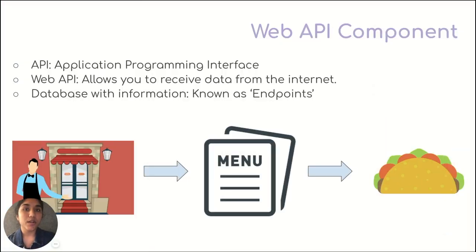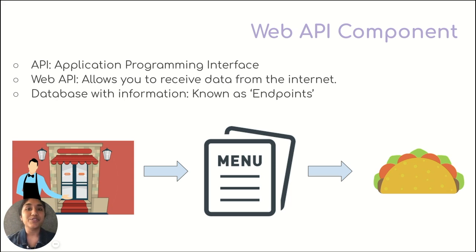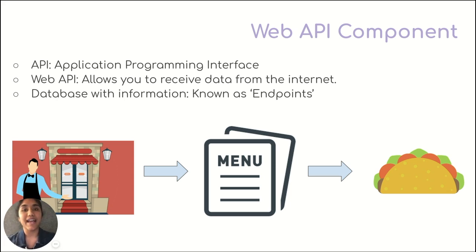What is an API? API stands for Application Programming Interface, and it allows your app and a data source to talk to each other. The Web API component allows you to get data from any public or private data source on the web. To make it a little easier, you can think of it as going to a restaurant and being given a menu card. You can then pick something off the menu, and shortly it will be served to you. That's exactly what using the Web API is like — you have a database, and you can specify what parts of the data you want to use in your app. In computer science, these functionalities are also called endpoints.